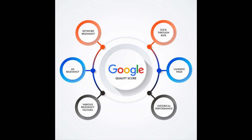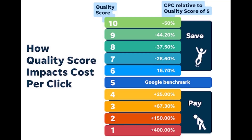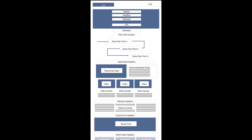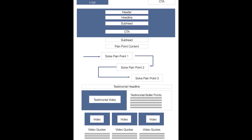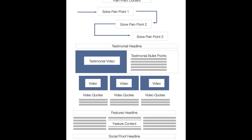Advertising platforms use a similar SEO algorithm to determine your quality score — an arbitrary score given to each page based on how it relates to the keyword. This helps advertising platforms keep irrelevant information off of certain searches. It also allows them to artificially inflate the price of a click. The code structure for this type of page is similar to the SEO structure, with a few major differences.